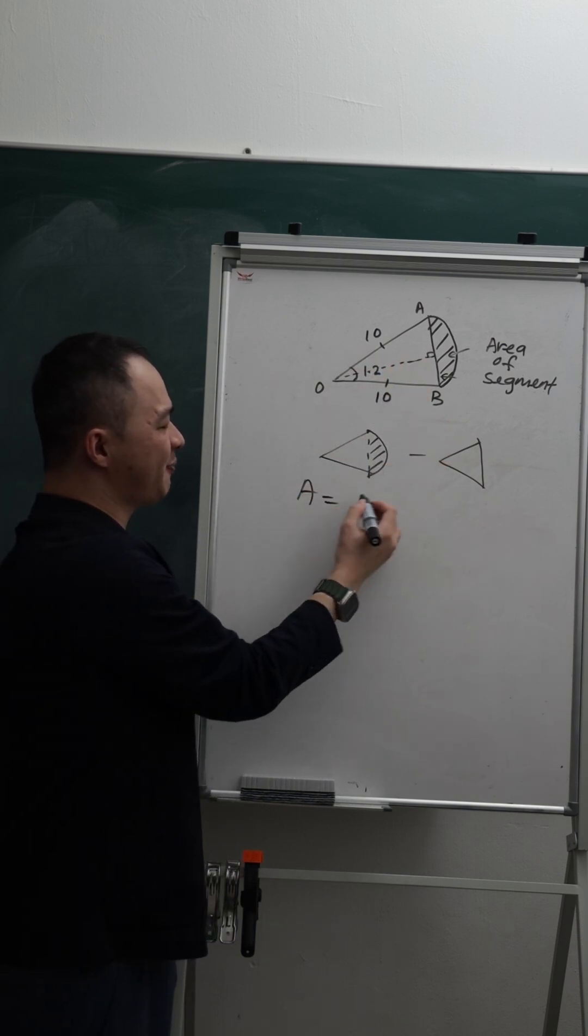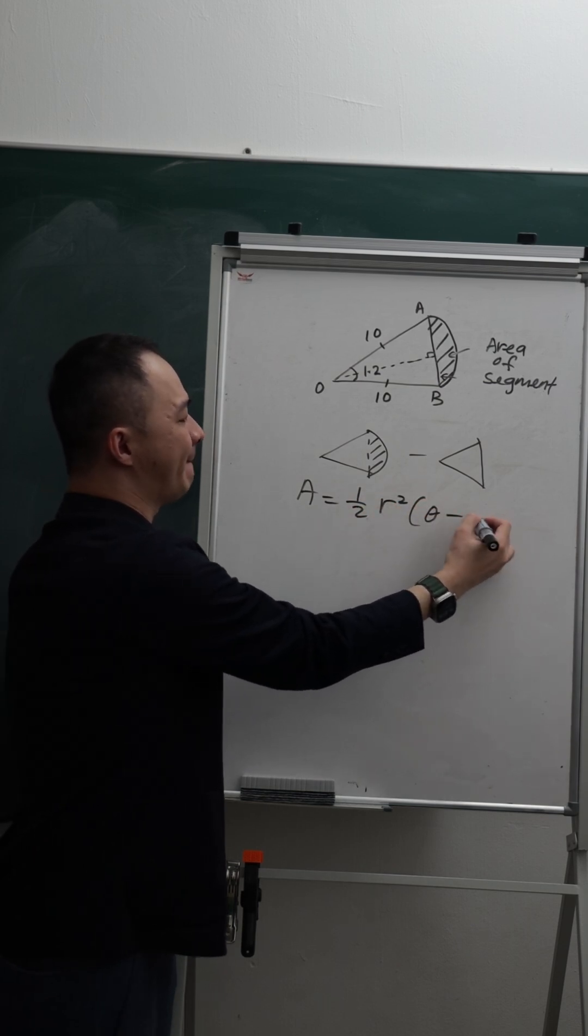So the formula is very simple: one over two r squared theta minus sine theta.